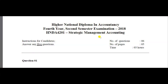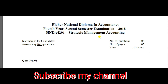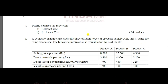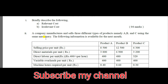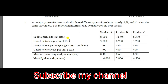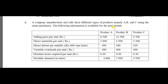Hi guys, in this video I will guide you to solve the short-term decision making question from the 2018 past paper of HND, fourth year second semester, question number two. The company manufactures and sells three different types of products — A, B, and C — using the same machinery. The following information is available for the next month.